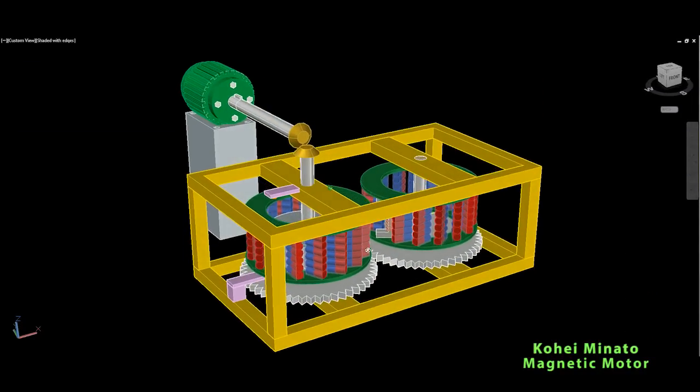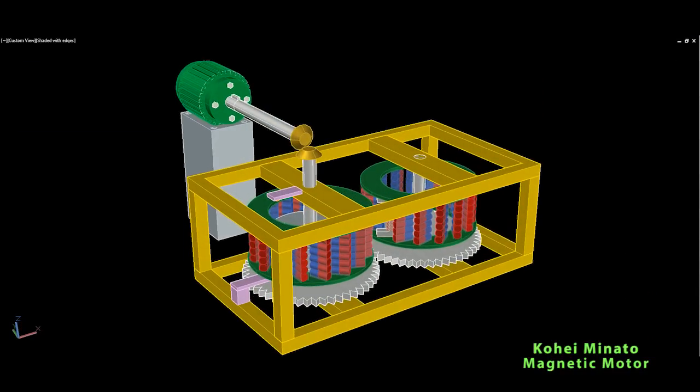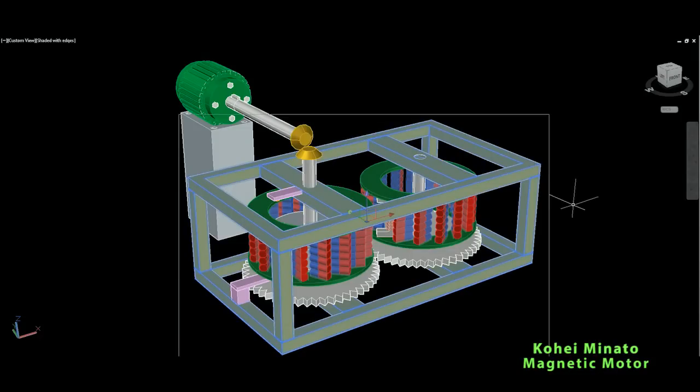As you can see, this yellow part outside is the housing which holds two rotors, one apart from the other.